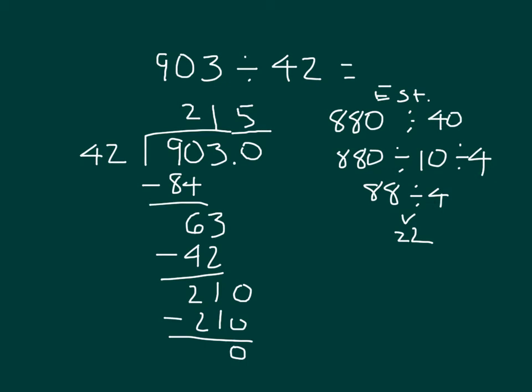Now my decimal point is right there, because I was working in the tenths place at that point. And then you see that my answer is 21.5. So if I read my whole number sentence, I have 903 divided by 42, equaling 21 and 5 tenths.